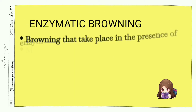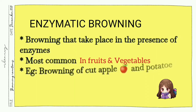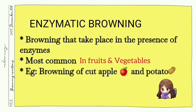In this video, I will be discussing enzymatic browning only. Enzymatic browning is a type of browning that occurs in the presence of an enzyme. It mainly occurs in fruits and vegetables — for example, cut apple and cut potato.